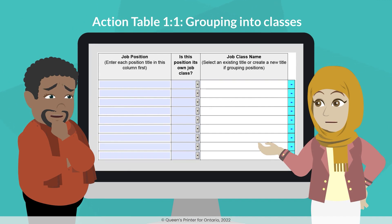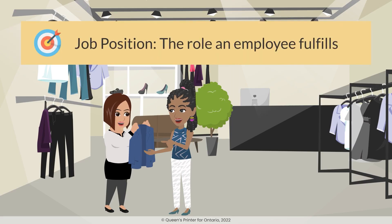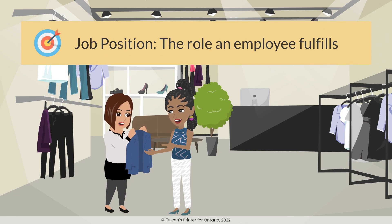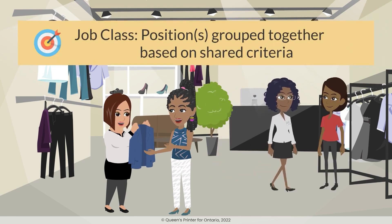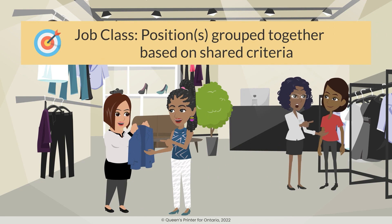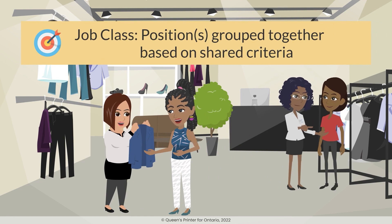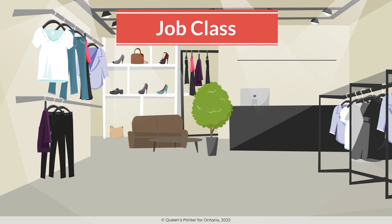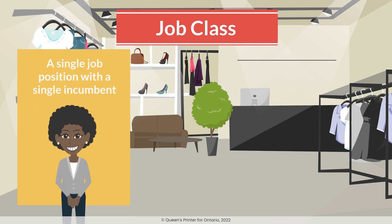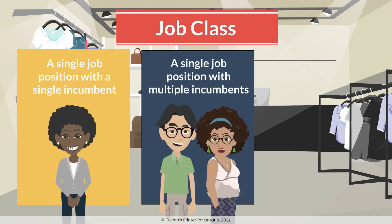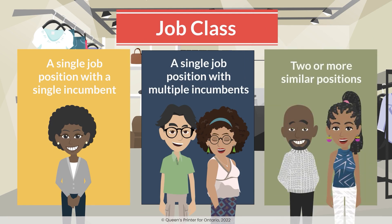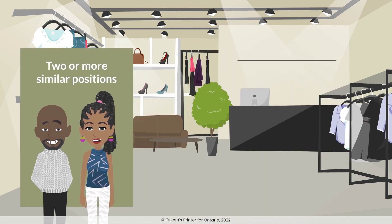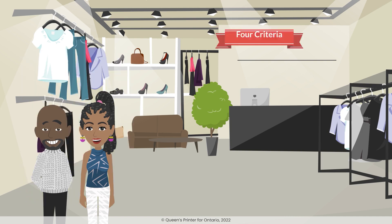Tell me again, what exactly is the difference between a job position and a job class? A position is the role an employee fulfills in a company, like Tatiana selling clothes as a sales associate. A job class, on the other hand, is a position or several positions grouped together based on shared criteria. A job class can be a single job position with a single incumbent, a single job position with multiple incumbents, or two or more similar positions. To decide whether two or more positions are similar enough to form a job class, we need to decide whether they are similar by using four criteria.